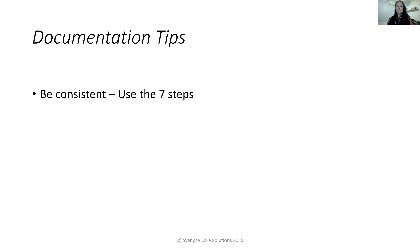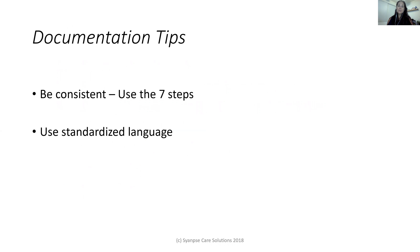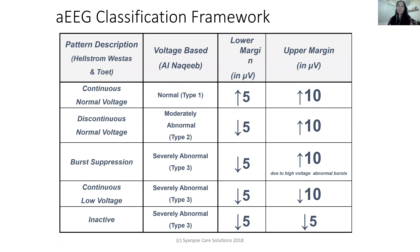My tips: number one is be consistent — use those seven steps in a very systematic way, making sure documentation is complete and consistent from provider to provider. Number two is use standardized language. If you are writing 'continuous normal voltage,' reference literature that supports what that means. If you say 'continuous normal voltage as defined by Hellstrom-Westis 2006,' we will know exactly what you mean — upper margins greater than 10, lower margins greater than five. If you just say 'continuous normal voltage' we can presume that's what you meant, but we don't know for sure.